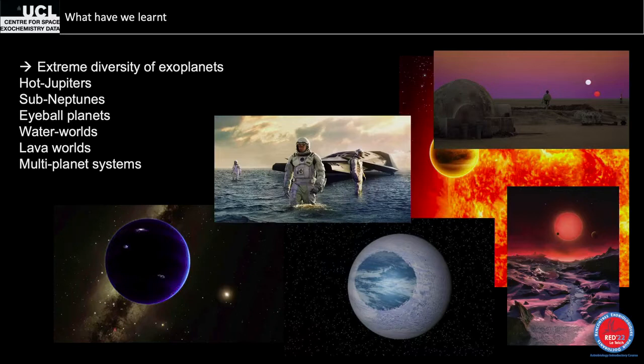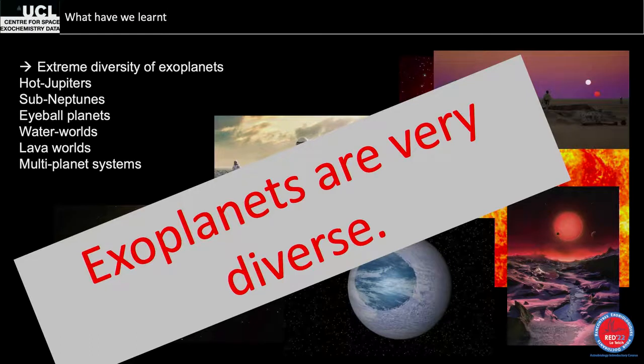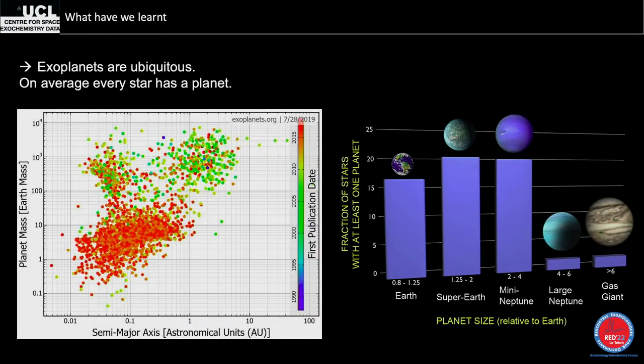Exoplanets are very diverse — you can take any planet from any space movie and I'm sure it exists. They are also ubiquitous. Looking at frequency versus planet size, gas giants and hot Jupiters are actually quite rare. The most common planets are super-Earths and mini-Neptunes — and we have no clue what they are made of. We don't detect any planets at 1 AU not because they don't exist, but because our detection techniques are limited.